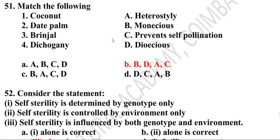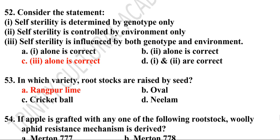Fifty-first question: Coconut is monoecious; date palm is dioecious; brinjal is heterostylic. Dichogamy prevents self-pollination. Option B is the correct answer. Fifty-second and fifty-third questions: Consider the statement — self-sterility is influenced by both genotype and environment. Option C is the correct answer.